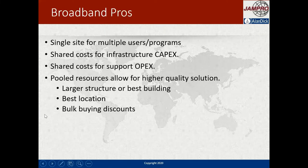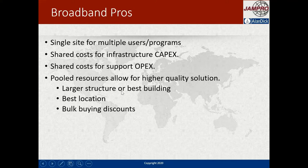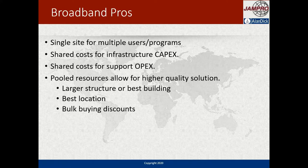Just to review the benefits of broadband: it means you can have a single site for multiple users and multiple programs. You don't have to have multiple towers — land is expensive — so you'd only need one tower, one building, and yet you can have multiple programs. This means you can share costs for infrastructure, so your capital expenditure can be shared between multiple parties, which reduces it.